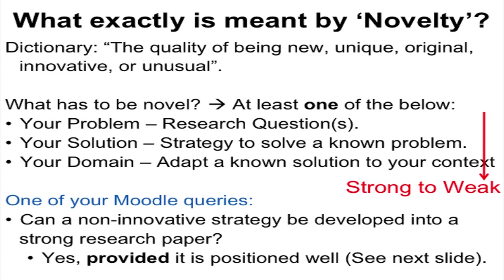A good example of the third case is the technique called peer discussion, which we are using in this workshop. It was invented in a different domain — physics education research — and various other disciplines have been adapting that same idea and trying to see how effective it is in their domain. The key point to remember is that this represents a spectrum of strength to weakness of novelty: it is strongest if you find a novel problem, and it is weak if your novelty is merely that nobody has done it for this particular topic.